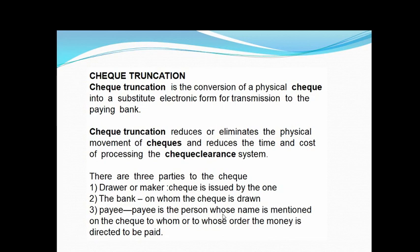In the cheque truncation system, the three parties are: the drawer or maker who issues the cheque, the bank on whom the cheque is drawn, and the payee — the person whose name is mentioned on the cheque. Using cheque truncation, processing speed increases while the time for moving the cheque is reduced.